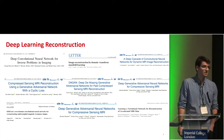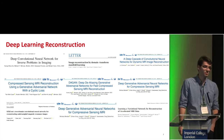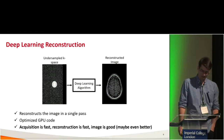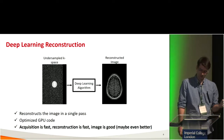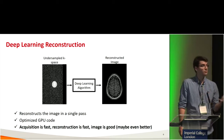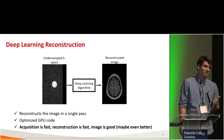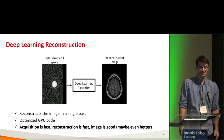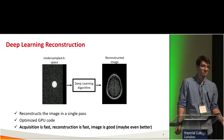Deep learning reconstruction is a really hot topic right now. In the past couple of years, we had about 40 publications just on MRI reconstruction. Many consider machine learning a new frontier in image reconstruction. The expectation is that deep learning can reconstruct images using a properly trained network in a single pass — no iterations. With an optimized GPU code, acquisition will be fast, reconstruction will be fast, and the image will be good — often even better than traditional compressed sensing.